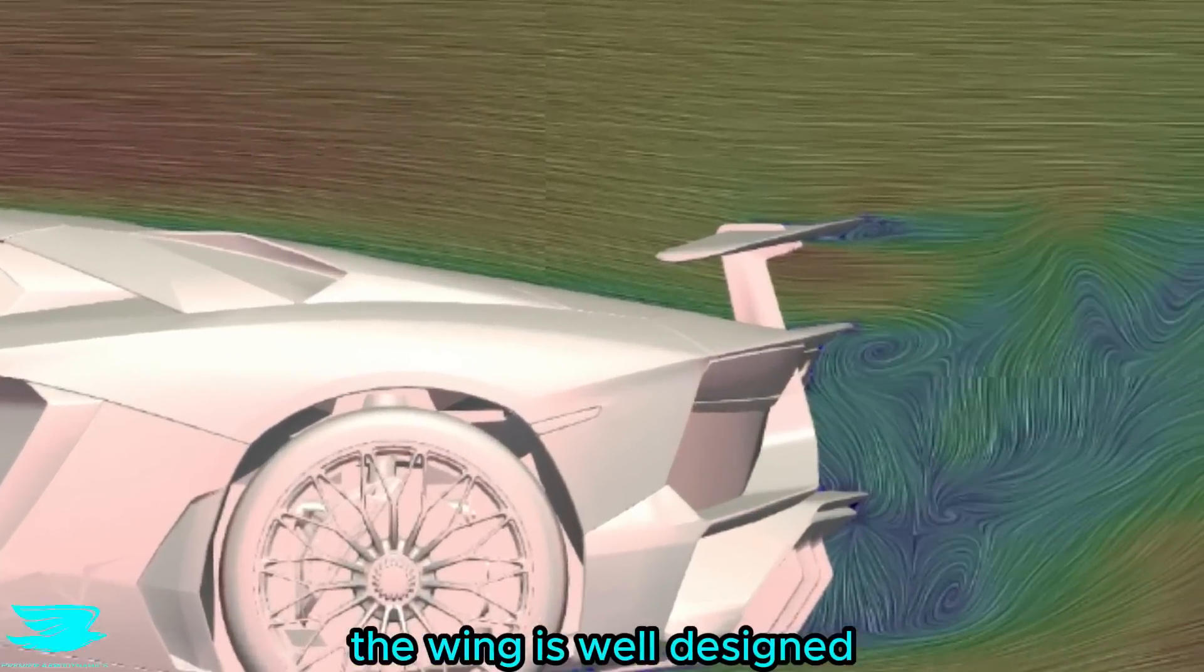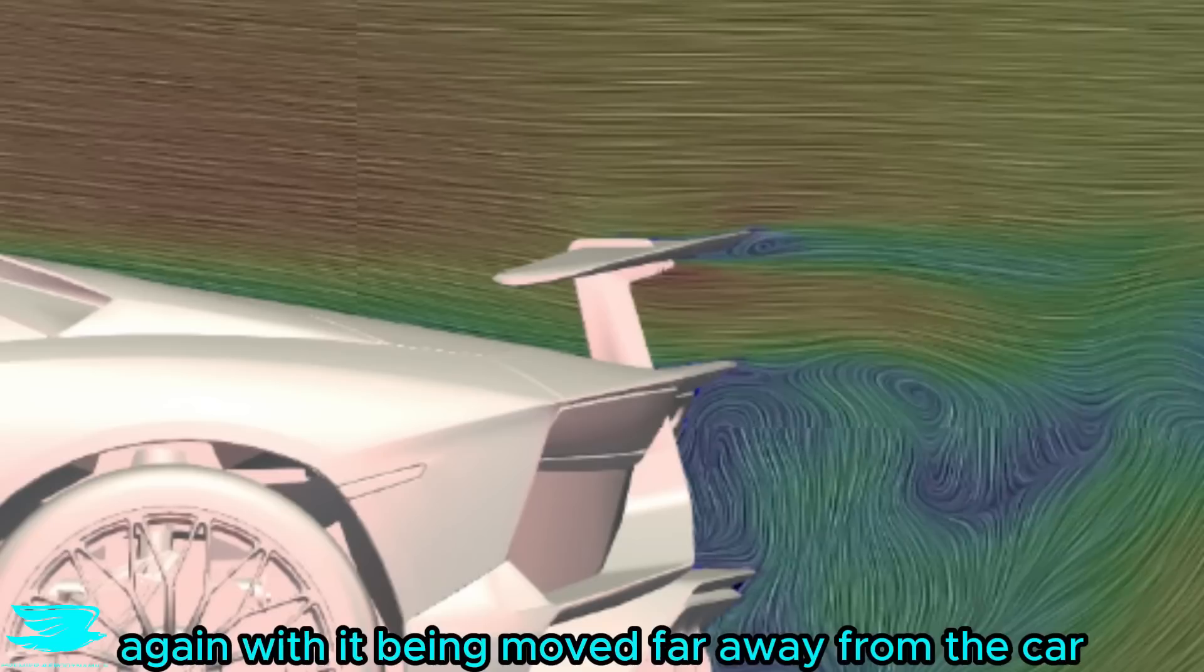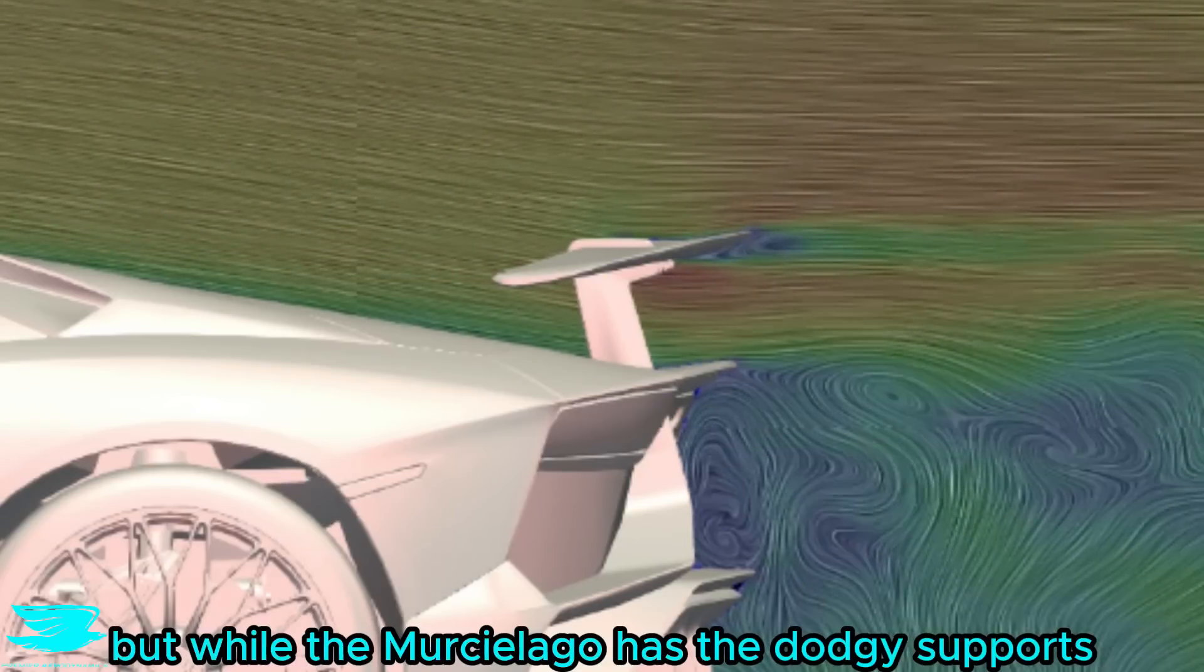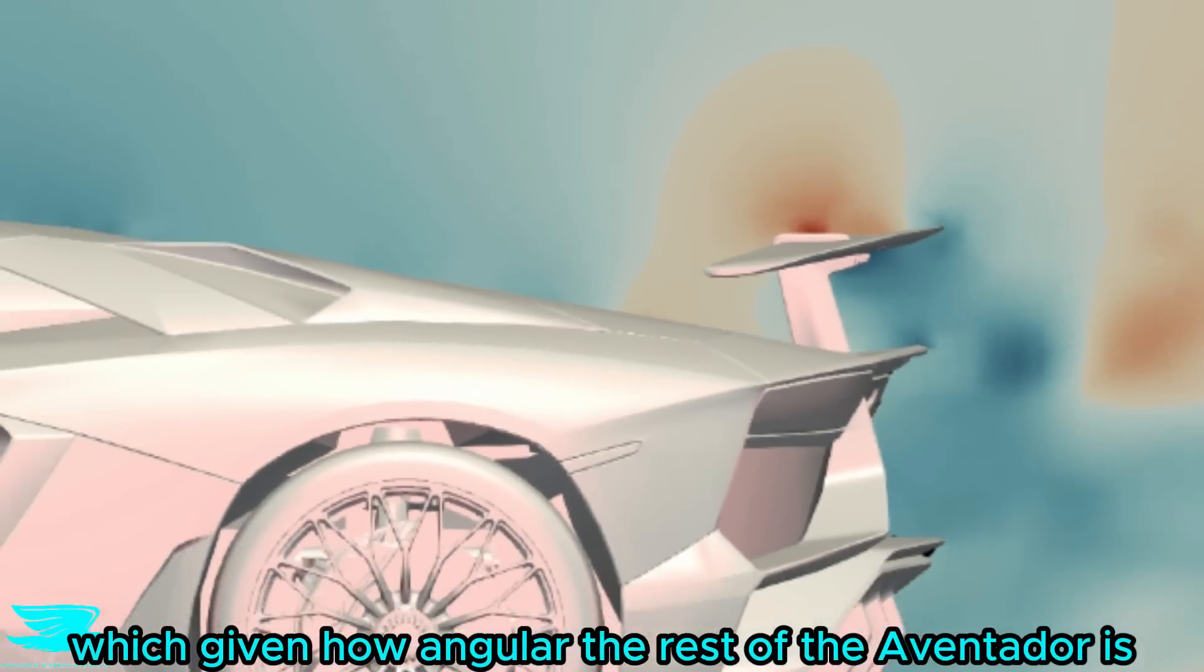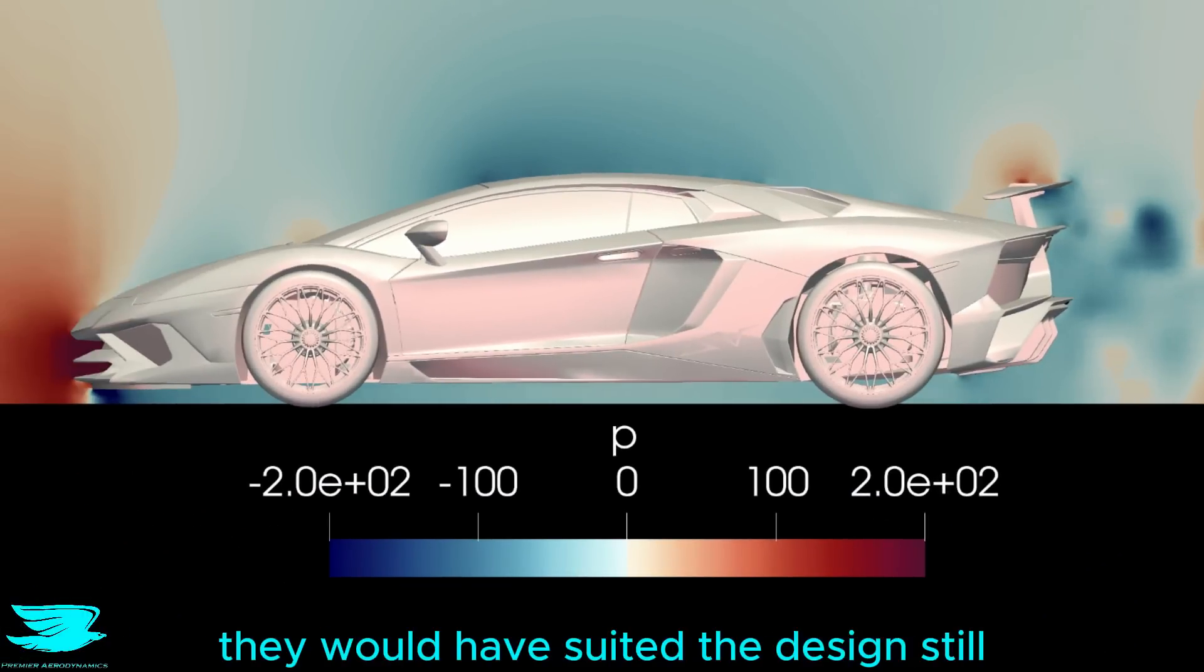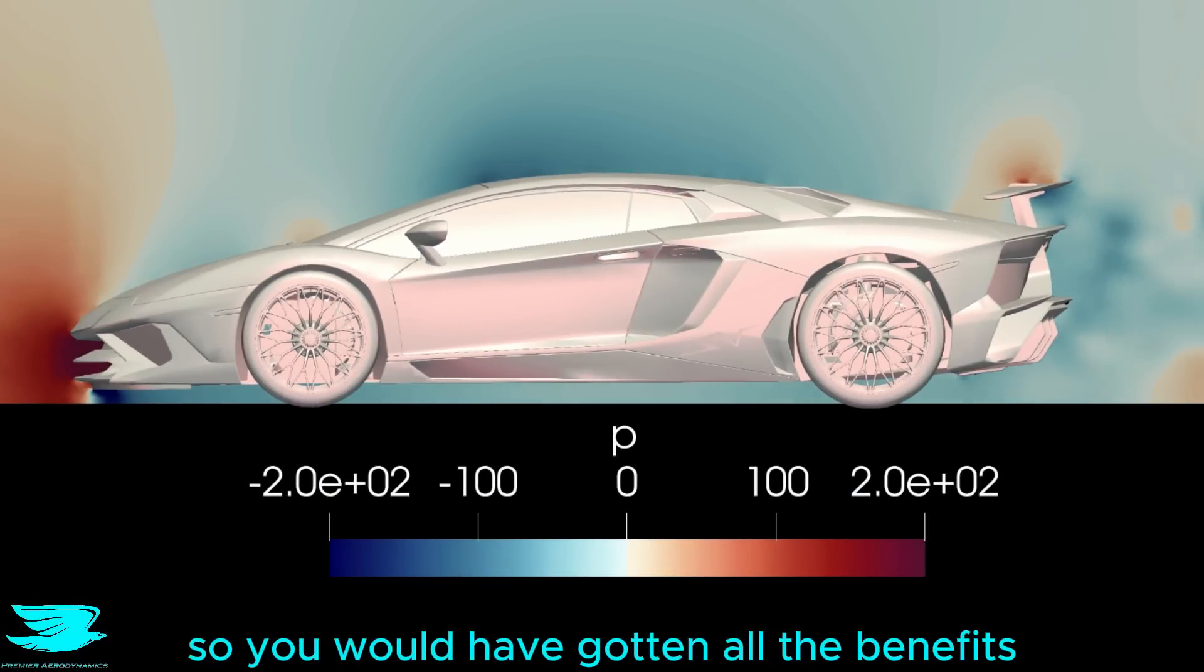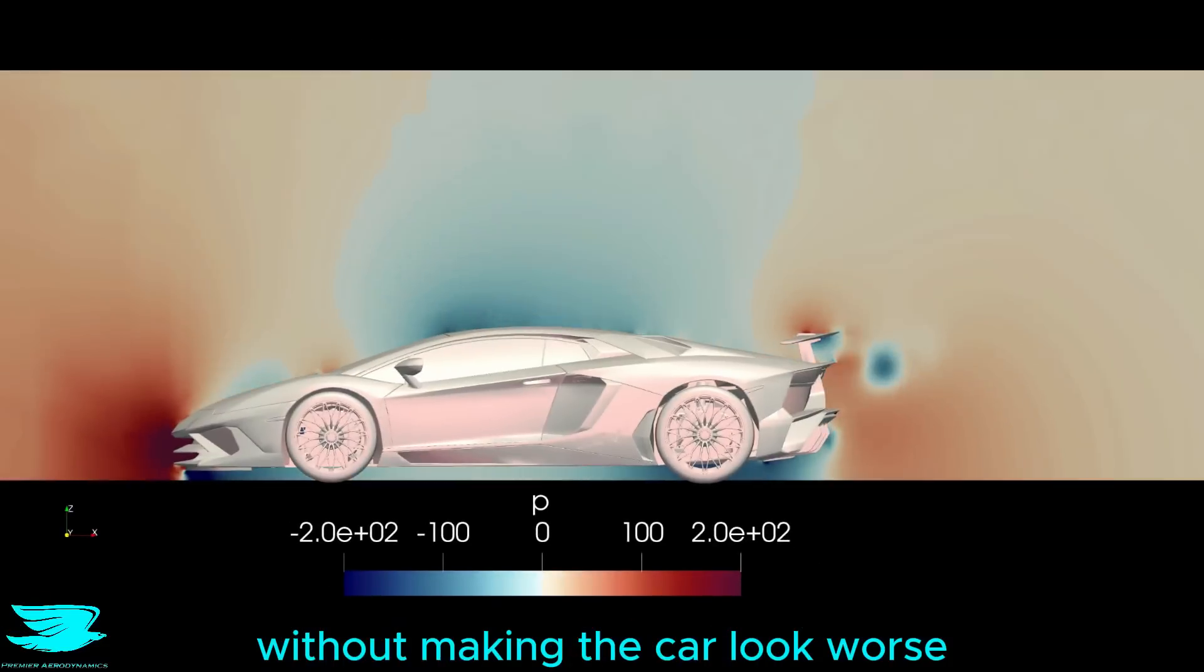The wing is well designed again, with it being moved far away from the car and it produces good downforce. But while the Murciélago has the dodgy support, the Aventador has much more streamlined ones. However, there still aren't any end plates on this wing, which given how angular the rest of the Aventador is, they would have suited the design still, so you would have gotten all the benefits without making the car look worse.